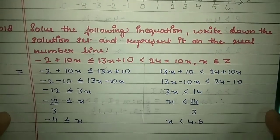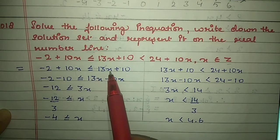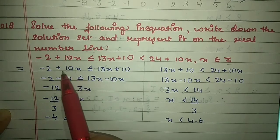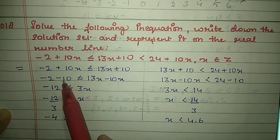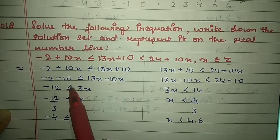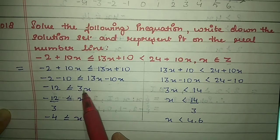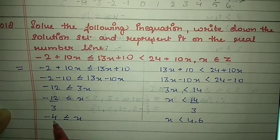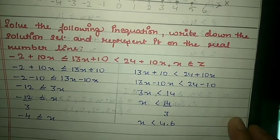Take the first half: minus 2 + 10x ≤ 13x + 10. Shift x to the right — 10x becomes minus 10x — and shift 10 to the left as minus 10. You get minus 12 ≤ 3x. Shift 3 across for division, giving minus 4 ≤ x.